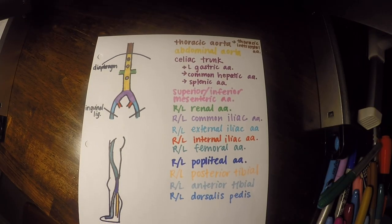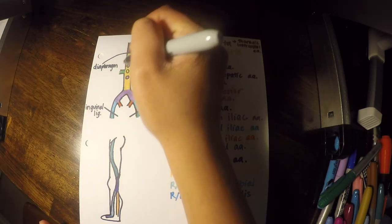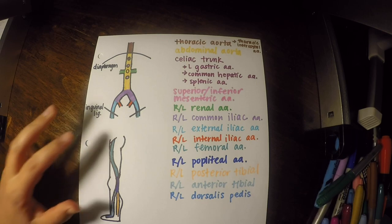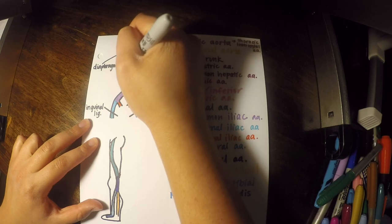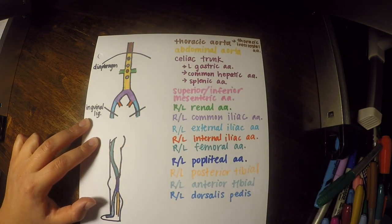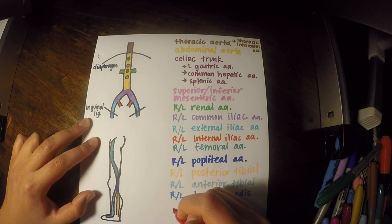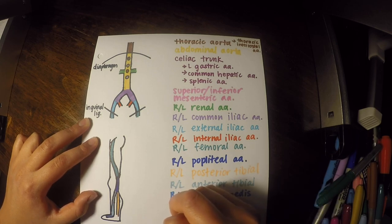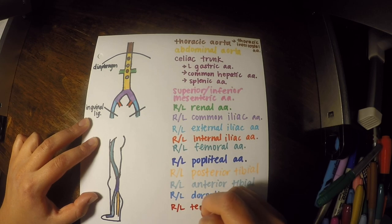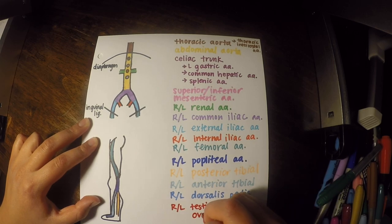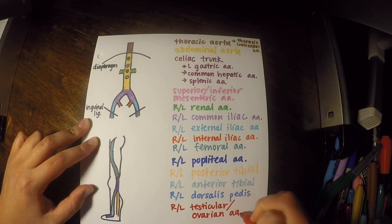The only other artery I forgot to mention is right here between the superior and inferior mesenteric arteries. It's going to be a little different for males or females, but it's going to be the testicular or ovarian arteries — so you're going to have a right and left testicular or ovarian artery depending on the sex of the person.